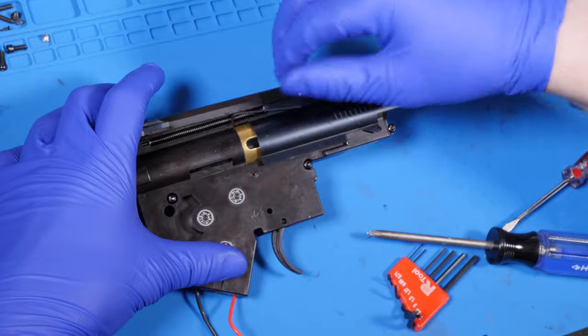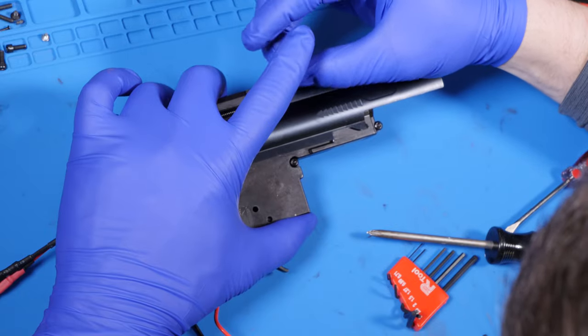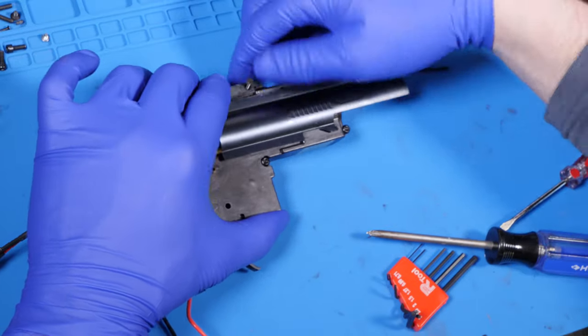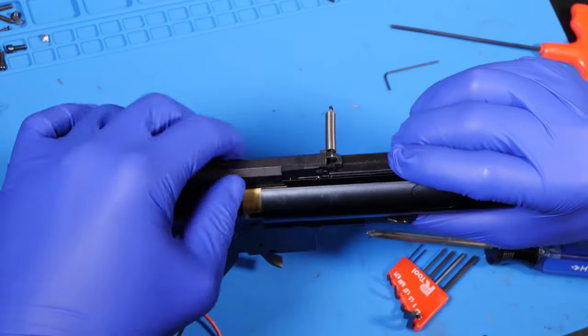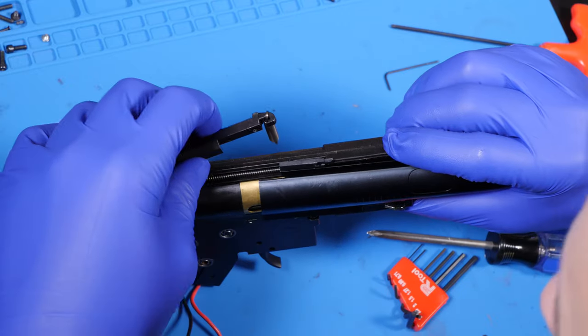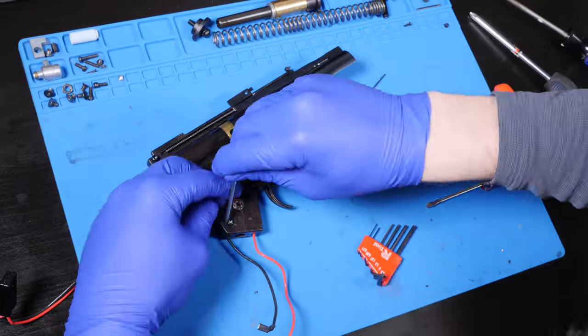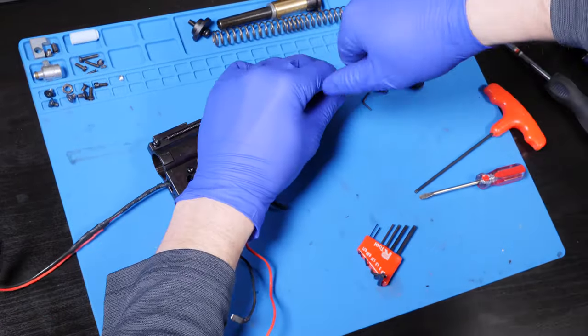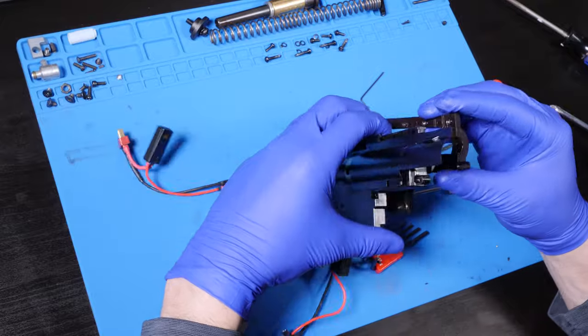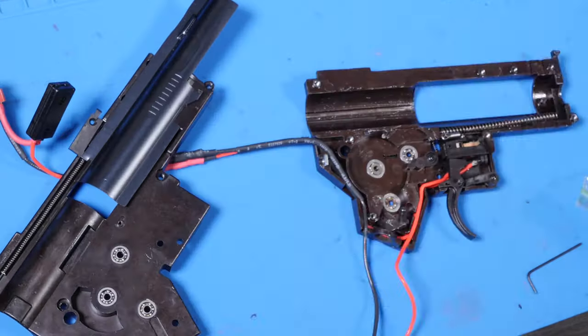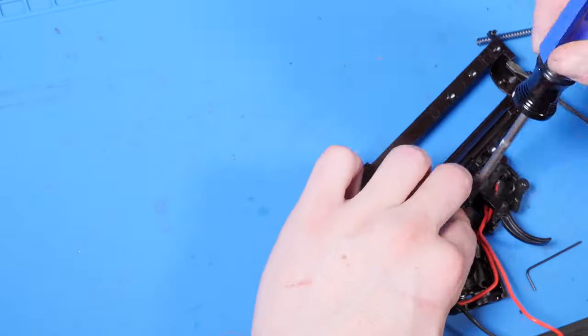Alright, with the QRF gearbox removed, let's go ahead and take out all the internals. To remove the charging handle, remove the small hex screw along the top side. The charging handle and the spring can then be removed and set aside. Next I remove all the screws clamping the gearbox shell together. With the gearbox opened up, I then remove absolutely everything internally to make room for the Wolverine Inferno engine as our HPA system.